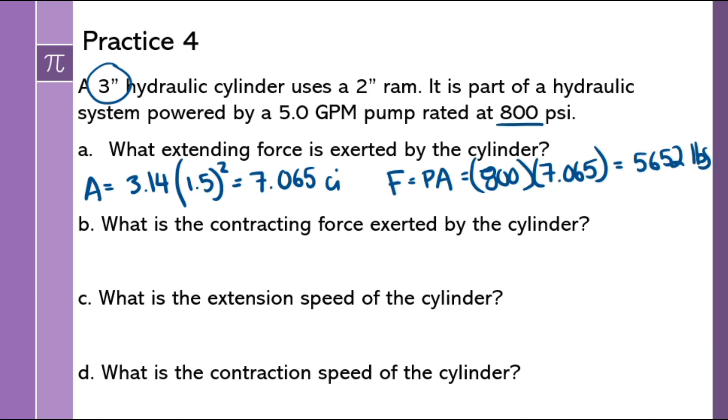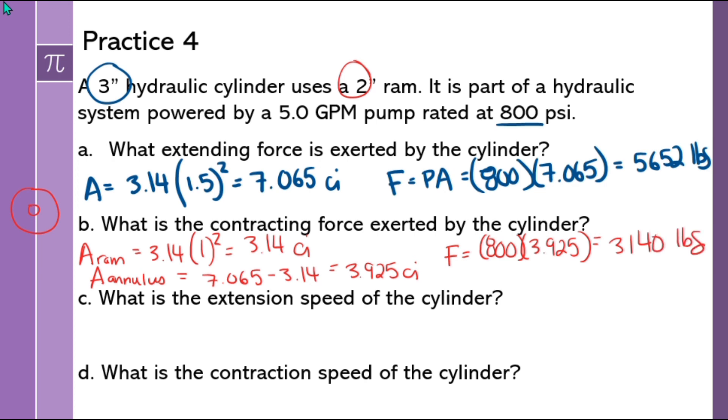Next, we're going to go over to the contracting force. What do I expect? I expect it to be smaller. There's less of an area applied. So the area of the ram comes into play because I need to find the area that is not of the ram. So 3.14 times 1 squared, that's nice, equals 3.14 cubic inches. The area of the annulus, which is what I need, the washer, it's going to be 7.065 minus 3.14. And that will give me 3.925 cubic inches. That goes into my force calculation. Pressure is the same. 800 multiplied by 3.925. And that will give me significantly less force, 3,140 pounds.